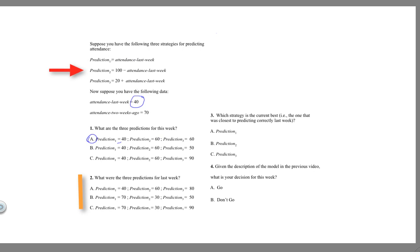Prediction two is 100 minus attendance last week. 100 minus 70 is 30. And prediction three is 20 plus attendance last week. 20 plus 70 is 90.